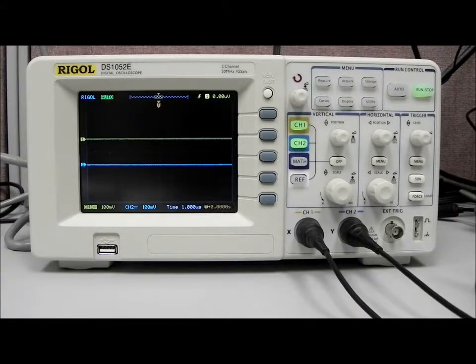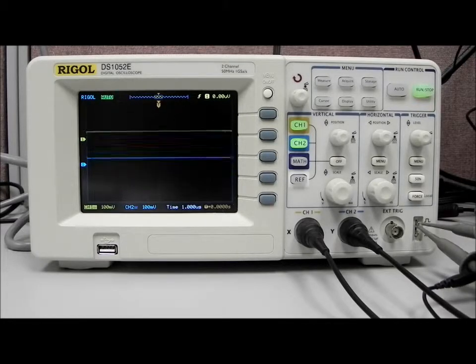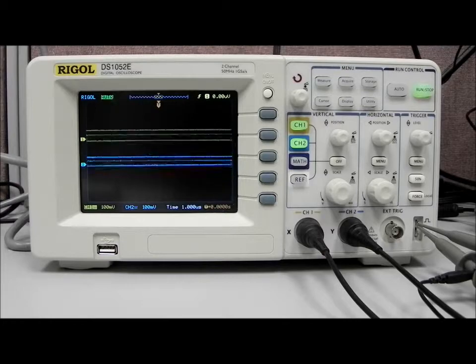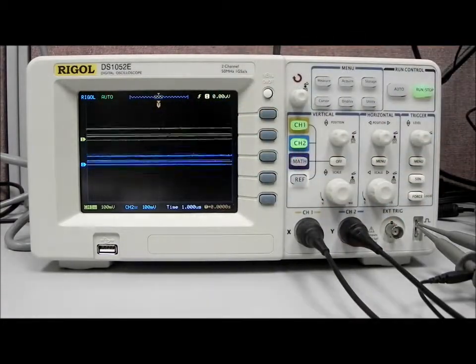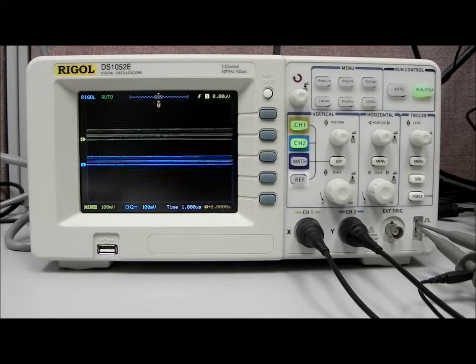First thing we're going to do is go to the probe compensation outputs here, which is going to deliver a one kilohertz, approximately three volt square wave. You can see that with the factory defaults, which is where we're starting, we have a lot of, well, we're not capturing the signal exactly like we would like.